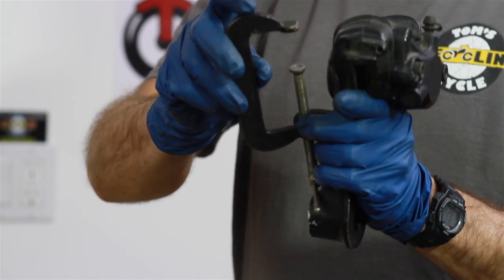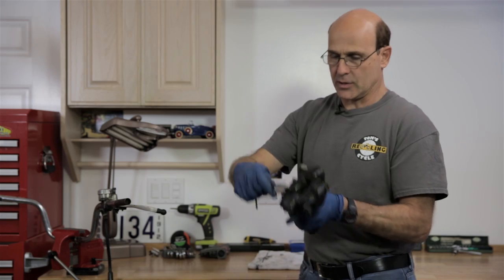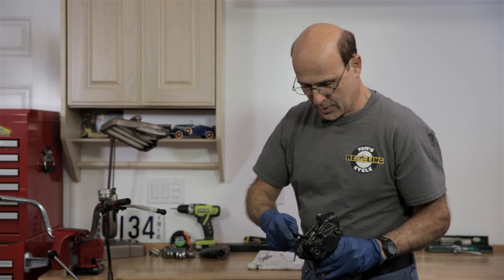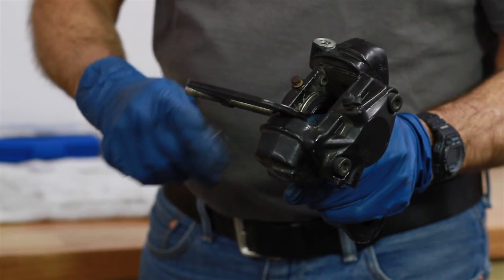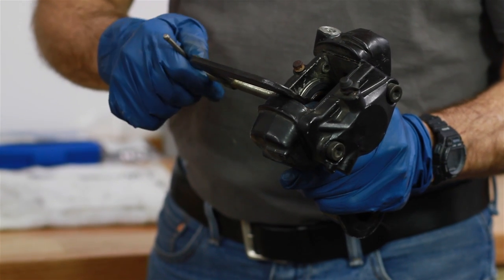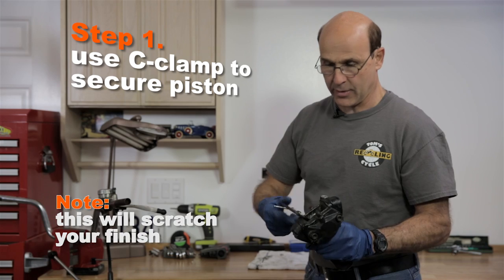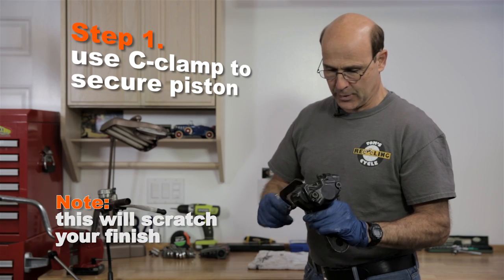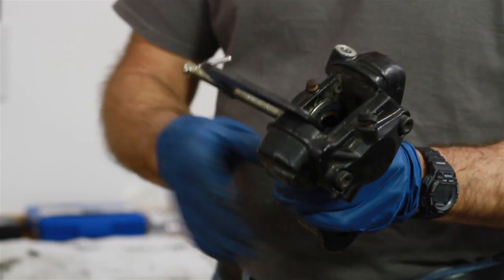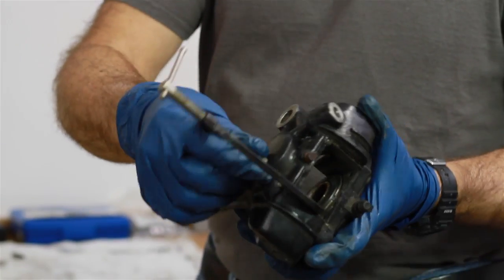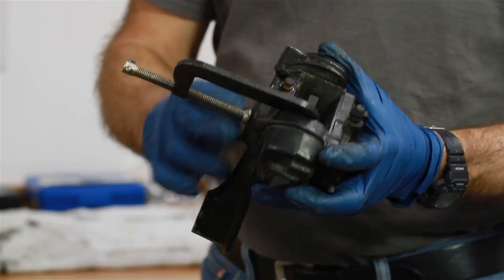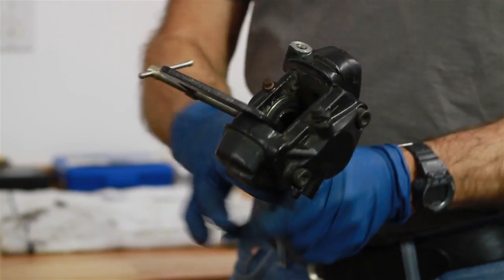This particular C-clamp is nice because it's kind of stepped, gives a little space so that when I put it on, it's kind of out of the way of the other piston at the same time. When you tighten this up, keep in mind you're going to mar the finish on the caliper. If it's still in nice shape and you don't want to damage it, then put some kind of protection in between the C-clamp and the body of the caliper.